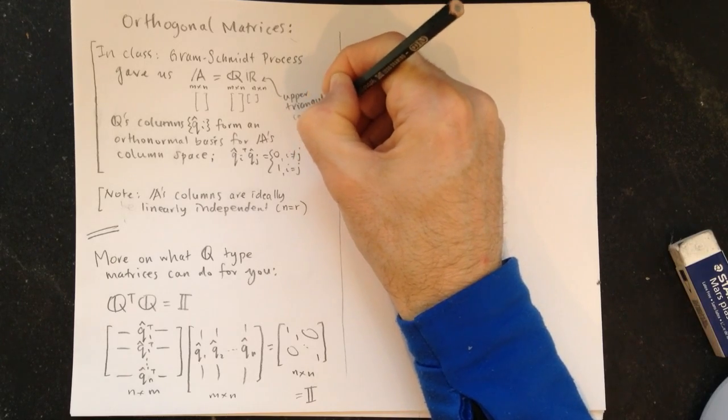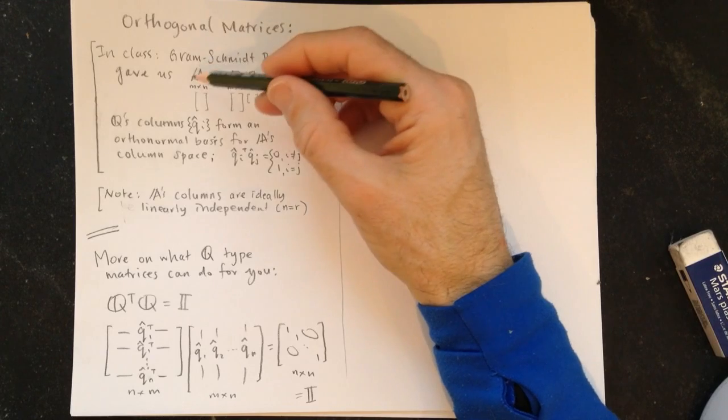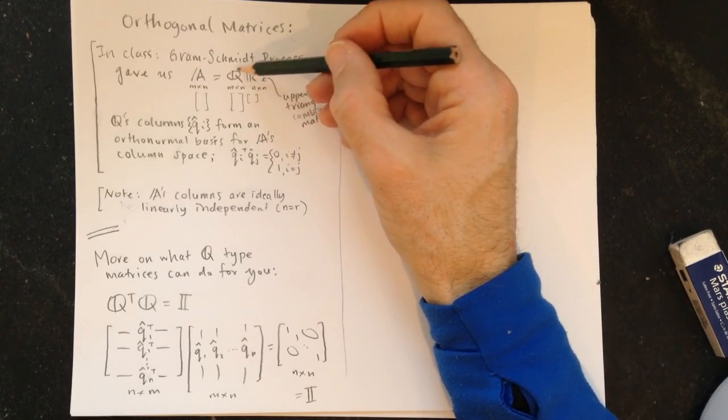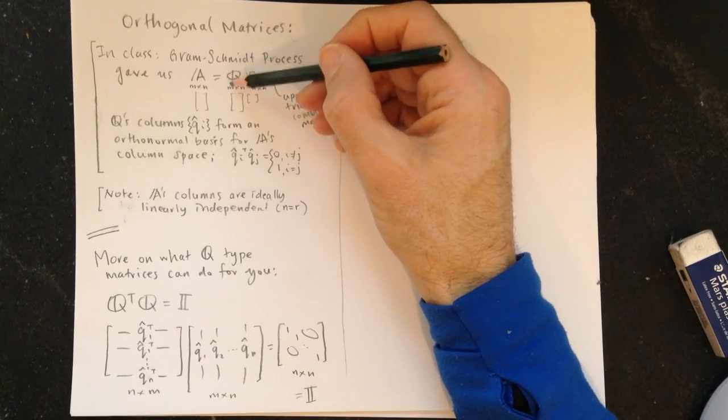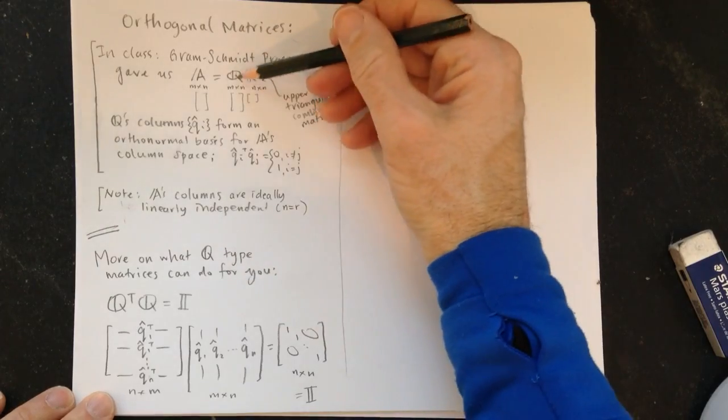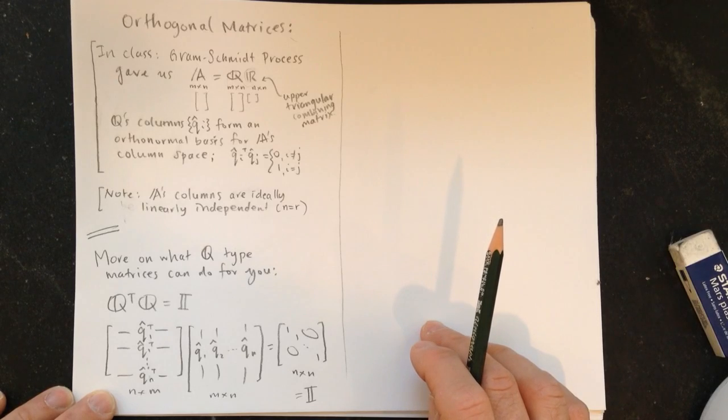So just as L in LU decomposition told you how to combine the rows of U to give you A, this one, R, tells you how to combine the columns of Q to get the factors of A. So the Q's columns are very simple, A's are whatever they are, and R tells us how to build them again.